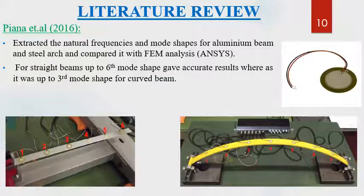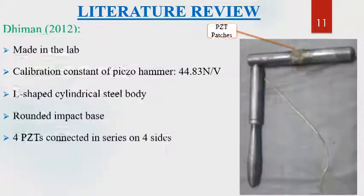Piana et al. in 2016 extracted natural frequency and mode shapes for an aluminum beam and steel arc, combining with FEM analysis done on ANSYS. PZT used as a sensor for a straight beam gave accurate results up to the 6th mode shape, whereas it was accurate up to the 3rd mode shape for a curved beam. A 2012 study calibrated a piezo hammer made in the lab, with a calibration constant of 44.83 Newton per volt. It is an L-shaped cylindrical steel body with a rounded impact base, with four piezo patches connected in series to measure force for modal analysis.